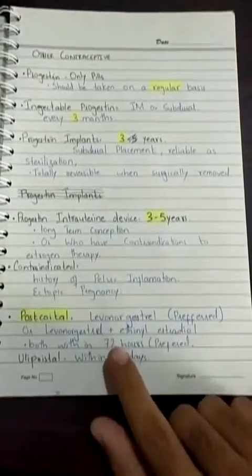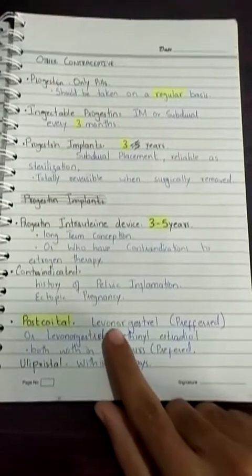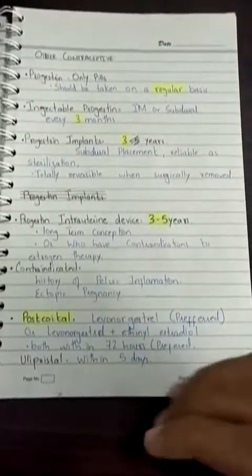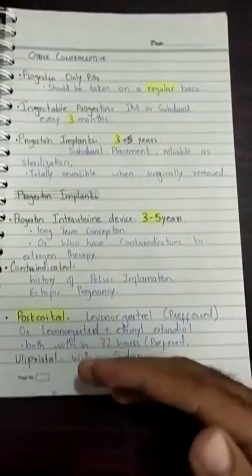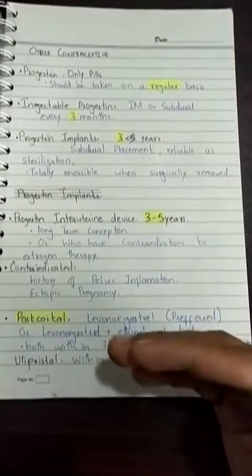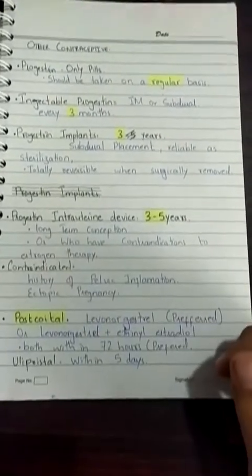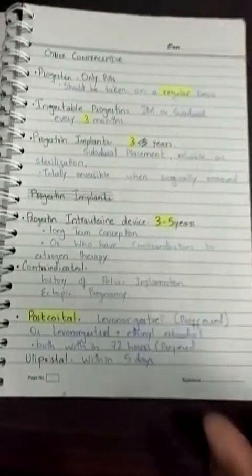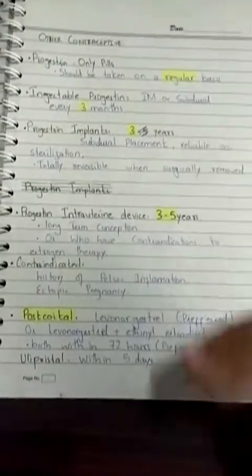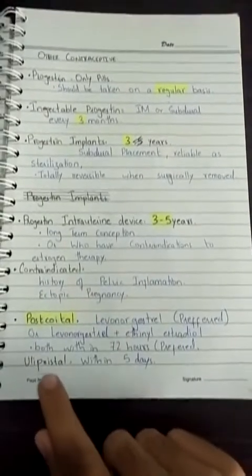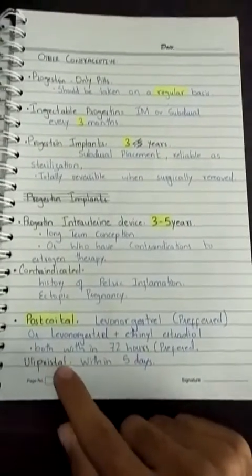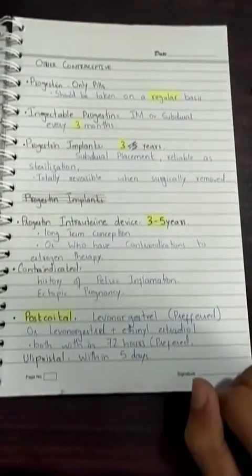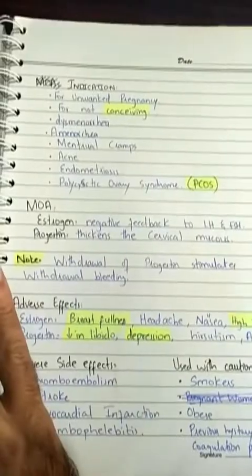The last contraceptive type is post-coital or emergency contraceptives, used after unprotected sex. The most common ingredient is levonorgestrel, which is the preferred ingredient for post-coital contraception. It can be combined with ethinyl estradiol and should be taken within 72 hours, or as soon as possible after intercourse. Additionally, ulipristal is a post-coital contraceptive that can be given within five days after intercourse.